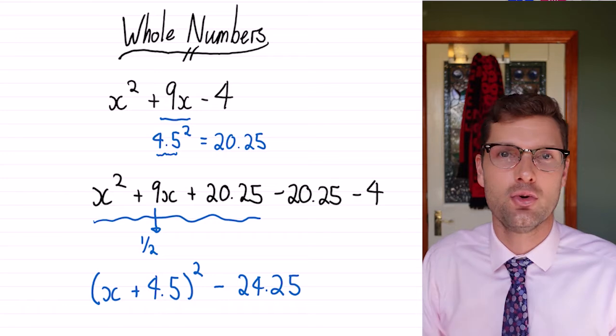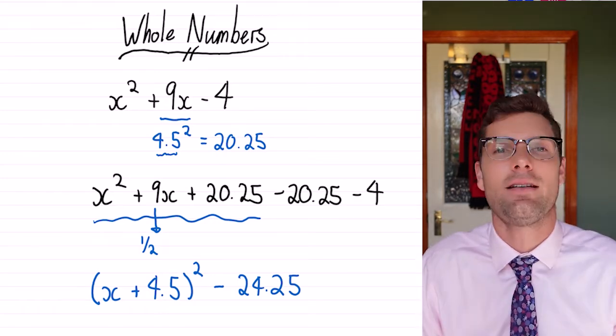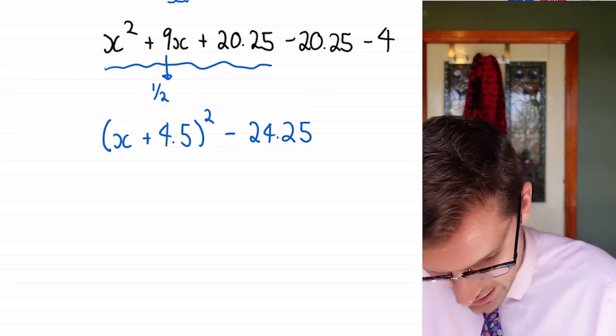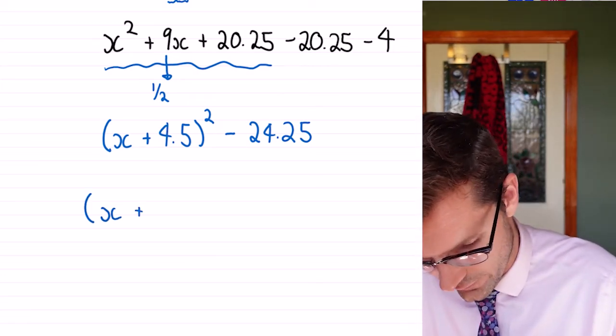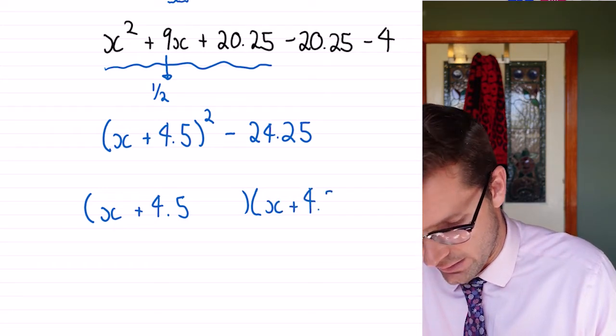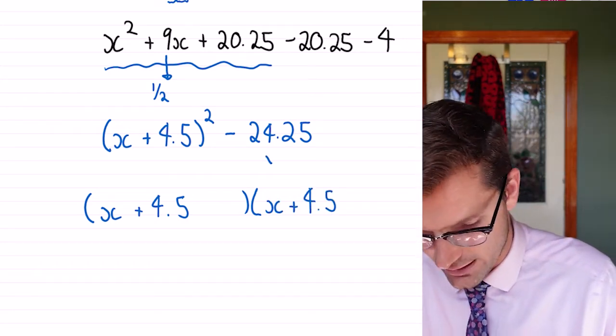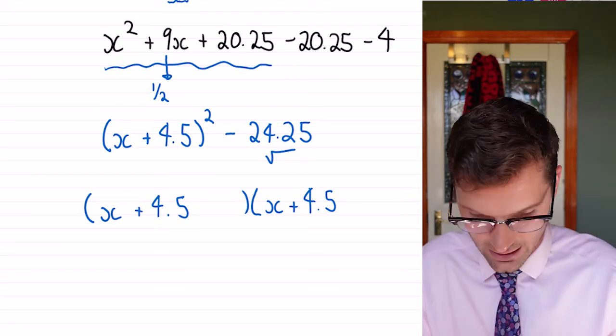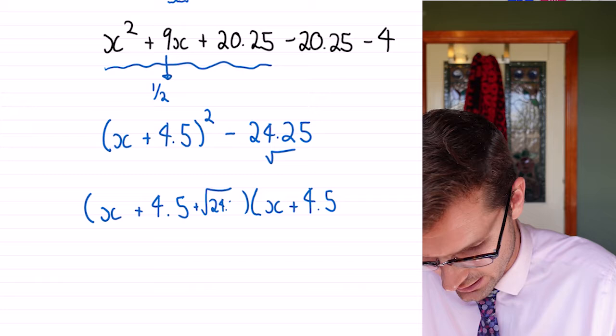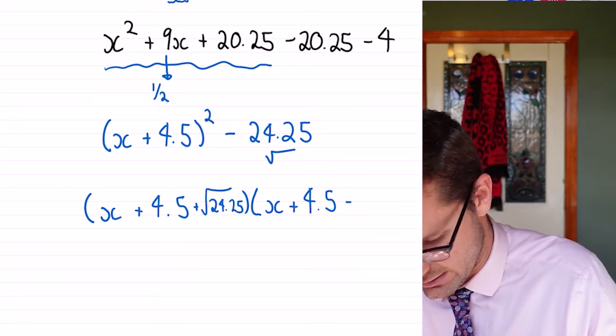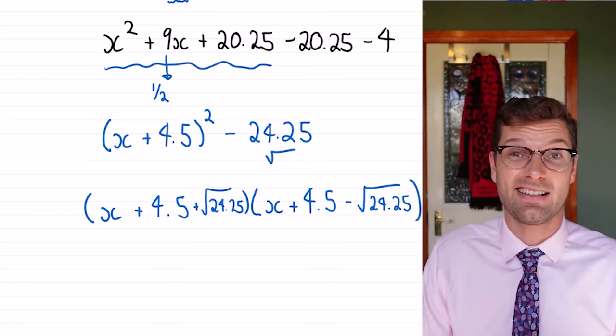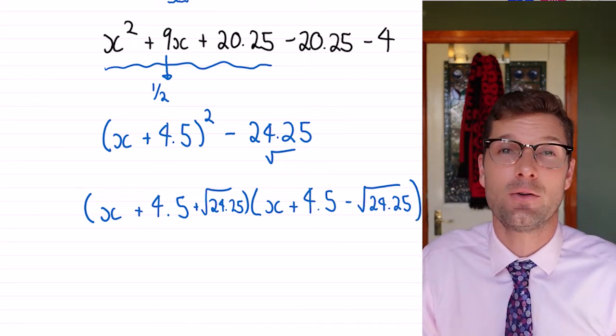Then because we've got two squares, right, and there's a negative sign in between, we can use the difference of two squares. So here we've got (x + 4.5)(x + 4.5). Then we have to add and subtract the square root of that last number. So this is plus the square root of 24.25, and this is minus the square root of 24.25, and that is good enough. That's fully simplified.